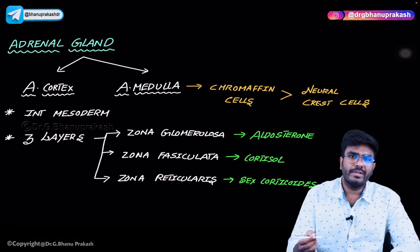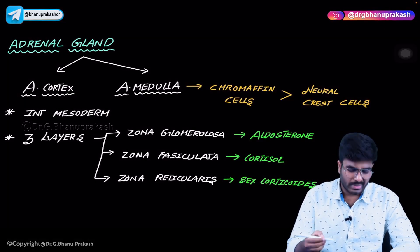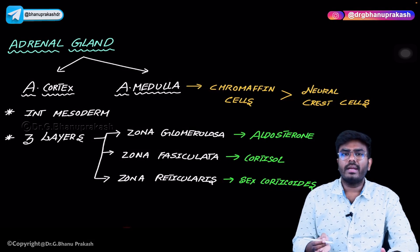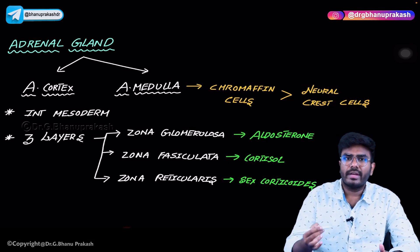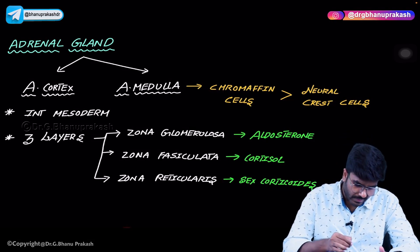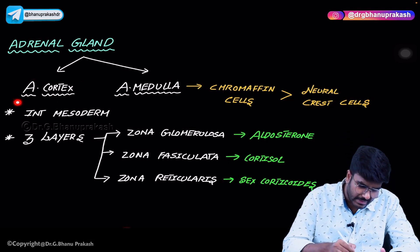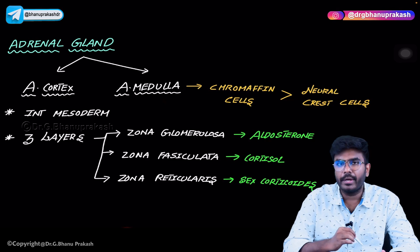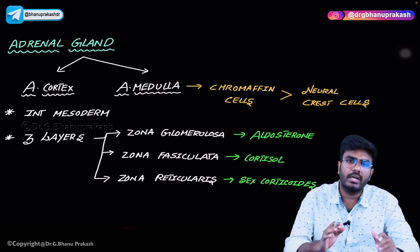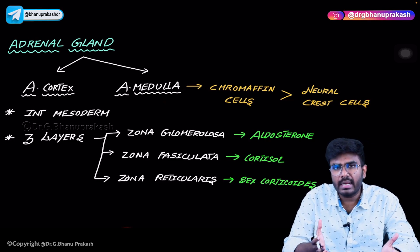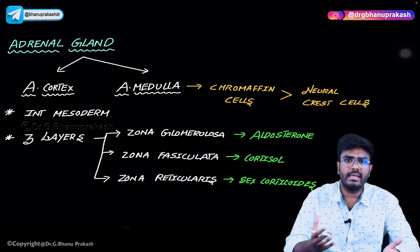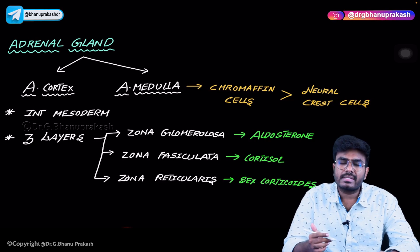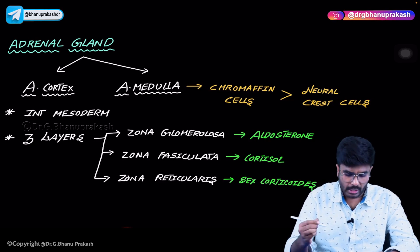Hello guys, in this video let's discuss the adrenal gland. The adrenal gland is divided into two parts: the adrenal cortex and the adrenal medulla. The adrenal cortex is the outer part and the adrenal medulla is the inner part. We have already discussed this in renal as well.